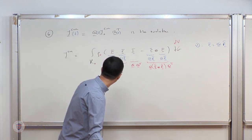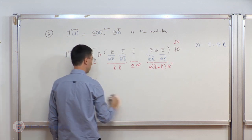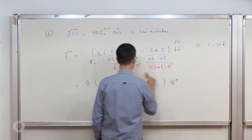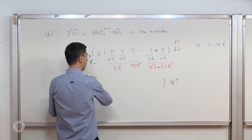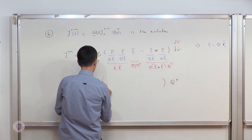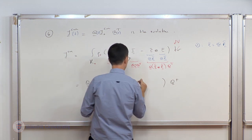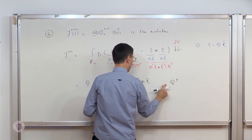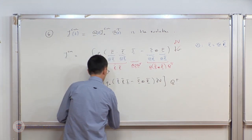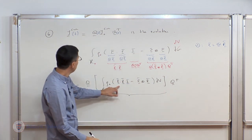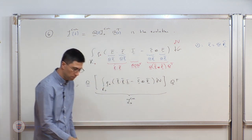So I have the result that expresses J_cm in terms of Q and Q-transpose. I can throw in an identity there — that doesn't change anything. Q comes outside, Q-transpose comes outside. What I'm left with is an integral over the reference configuration: rho-naught times (r-bar dot r-bar times identity minus r-bar tensor r-bar) d-capital-V. I recognize this to be the inertia tensor on the reference configuration, denoted J_0. And that's the proof.